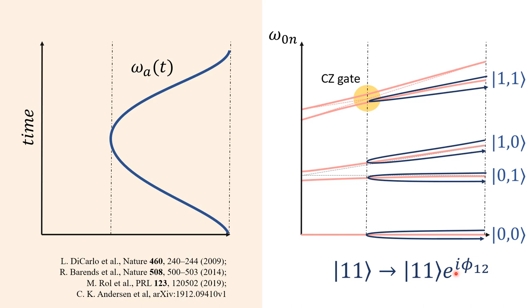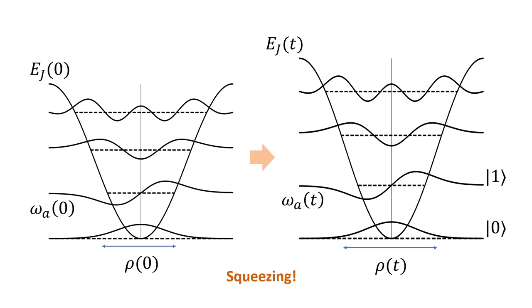Due to the interaction with the 2-0 state, the 1-1 state acquires an additional phase. This phase can be sufficient to implement the control phase gate. During the implementation of the ramp down and up of the frequency of the qubit, we have squeezing, as I said before. This distorts the wave function of the transmon and has to be considered in the dynamics and the design of the control.